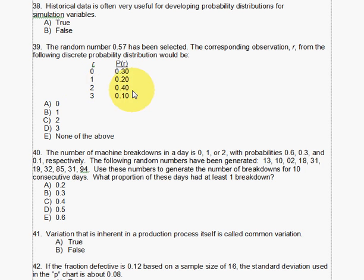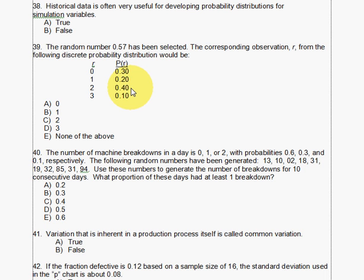All we have to do to figure out where this 57 falls is work our way up. Is it less than 30? Nope. Now we add 20 to the next one — is it less than 50, which is 20 plus 30? Nope. We left off at 50, so we add 40 to get 90. Is it less than 90 but greater than 50? Yes it is. So our value in this case is going to be a 2.